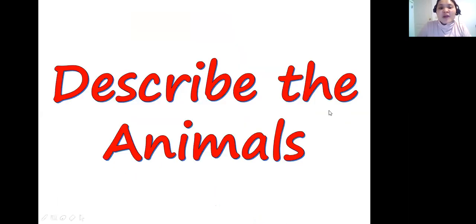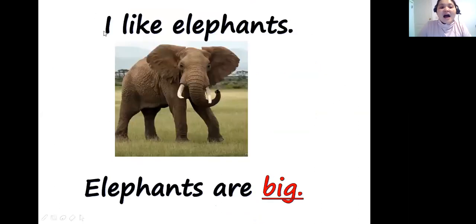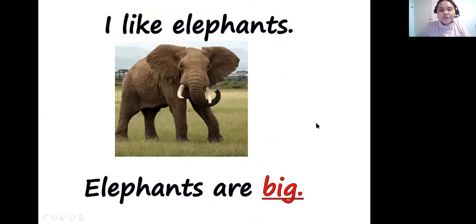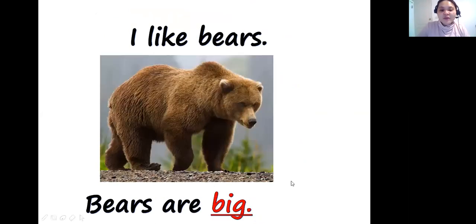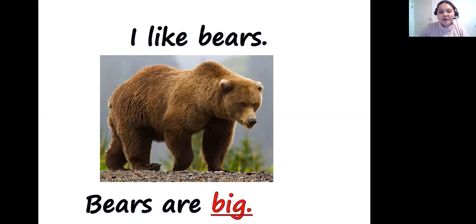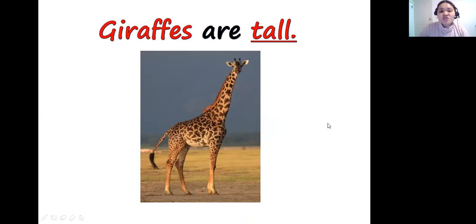After naming them, let's try to describe the animals. We can say: I like elephants. Elephants are big — they are not small, they are big. What about bears? Bears are big too, that's correct.